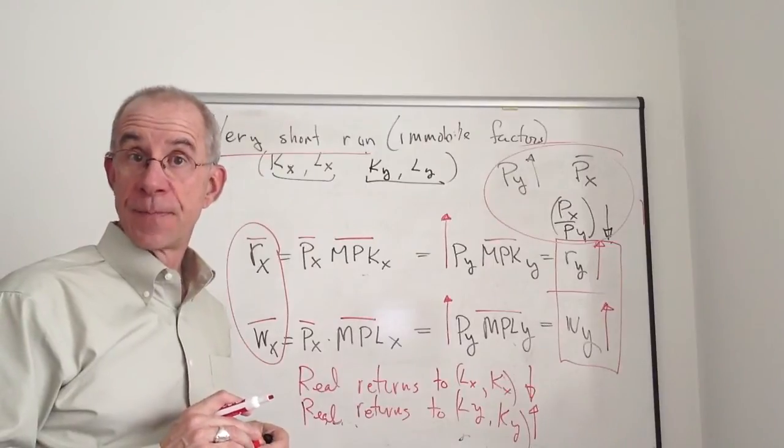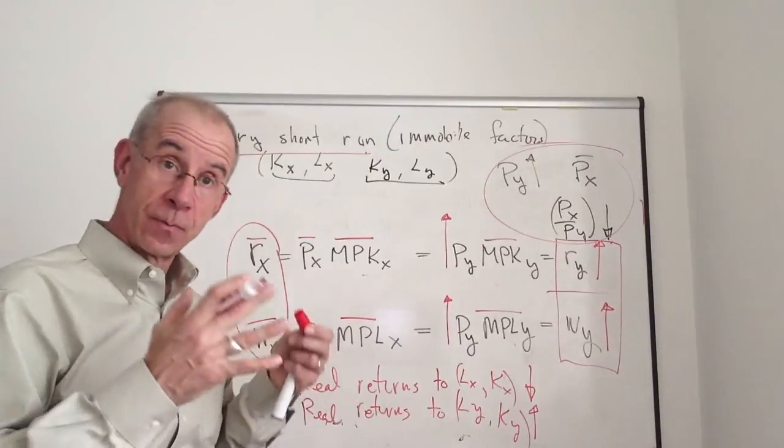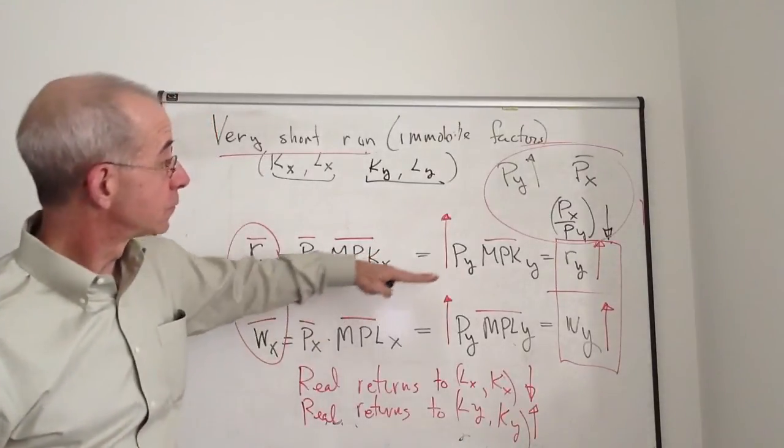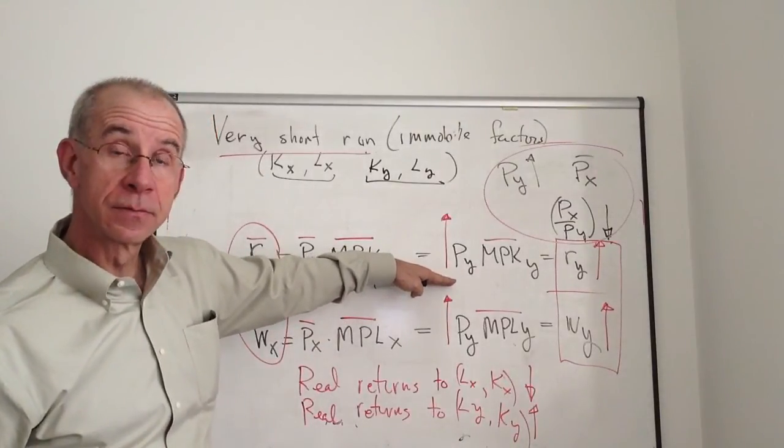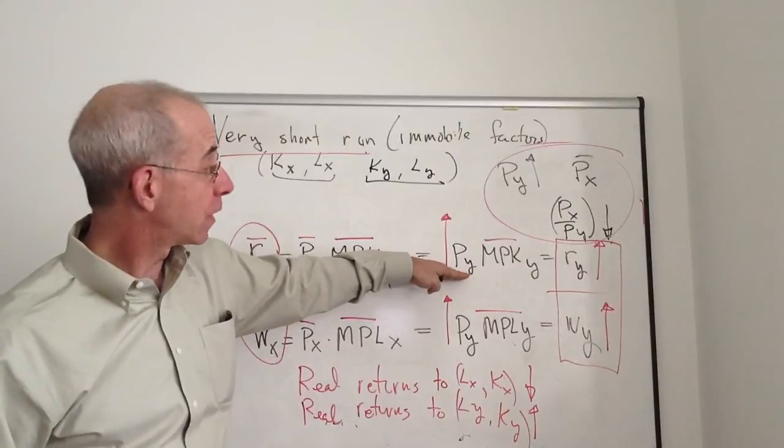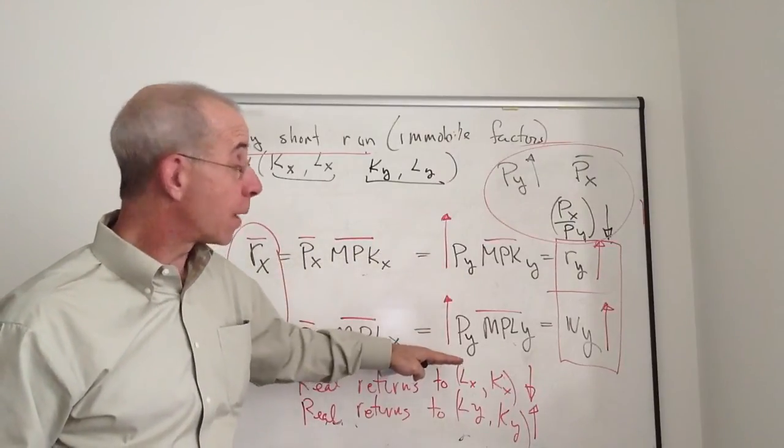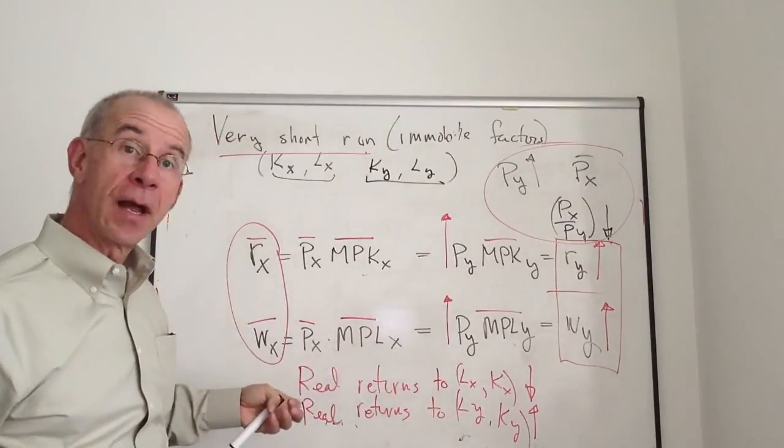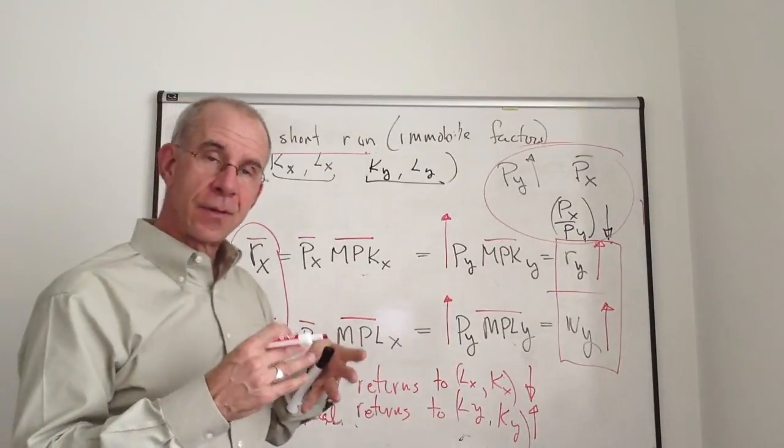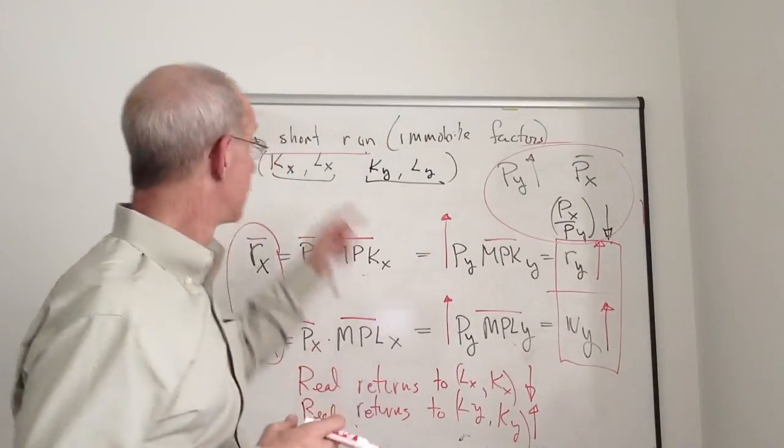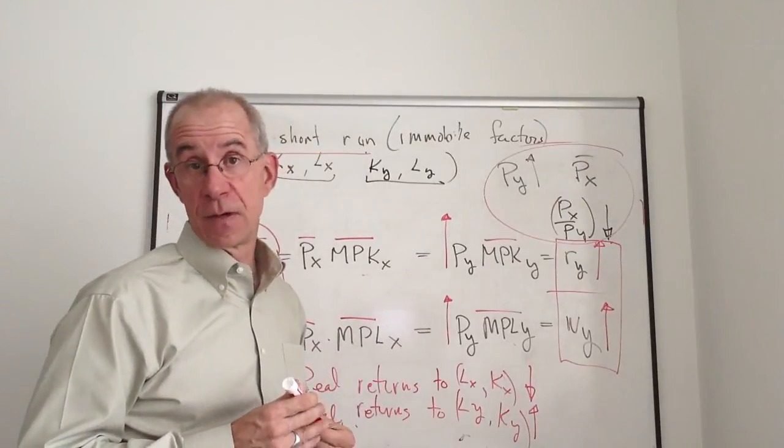They're going to fight together. Labor and capital are going to have the same interests, either in terms of supporting a price rise for workers and labor in industry Y or opposing that price rise if you're in industry X. The economic interests of labor and capital are aligned in this very short run.